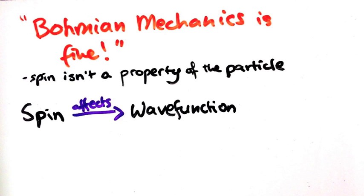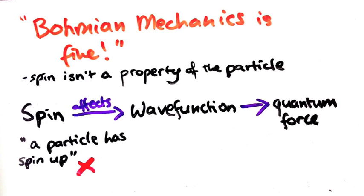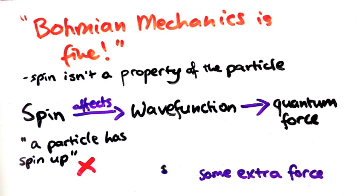The spin affects the wave function, which affects the quantum force, which changes the direction of the particle. It doesn't make sense to say a particle has spin up. Instead, what you mean is the particle experiences some extra quantum force upwards because of spin.